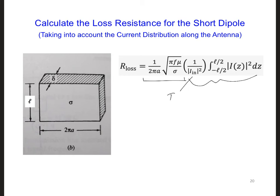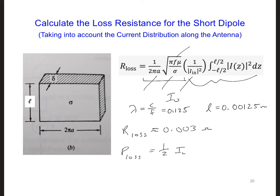So here we can plug in I naught for I in. The radius A of our dipole is 1 millimeter. The conductivity of copper we already gave. The frequency 2.4 gigahertz. And since lambda is C over F, since we're in free space, we're going to get 0.125. And then L of our short dipole is 0.00125 meters. So if we plug all this in, we're going to get our loss is about equal to 0.003 ohms. And if we use that to calculate P loss, we can get one-half I naught squared R loss. And we get 0.0015 I naught squared.